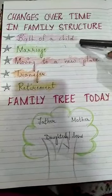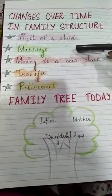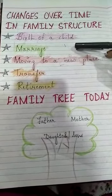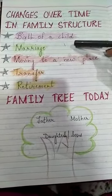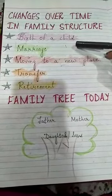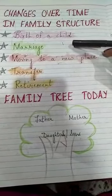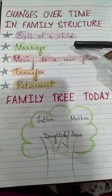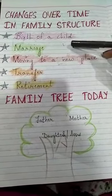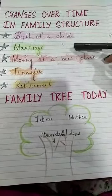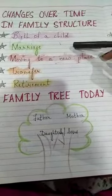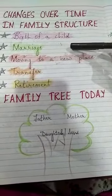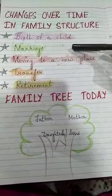The second point is marriage. Suppose if your sister is married, she is going to another person's house, so the number of members is decreased in your family. And if your uncle is married, your aunt will come, so a member will be added to your family. So that brings a change in the family structure.